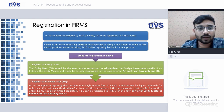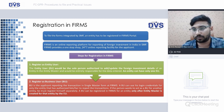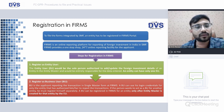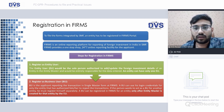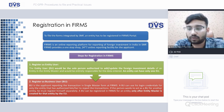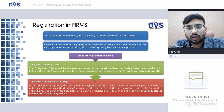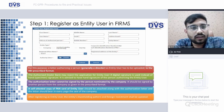After registering as Entity User, there has to be registration as a Business User. The Business User is the applicant reporting the transaction in the Single Master Form on FIRMS. A BU can use their login credentials only for the entity that has authorized them to report the transaction. If a person wants to act as BU for another entity, they may register separately. A BU can be registered for an entity only after the Entity Master is created for that entity by the EU.